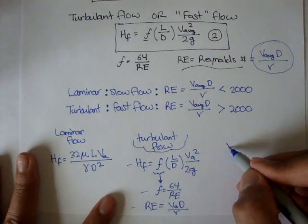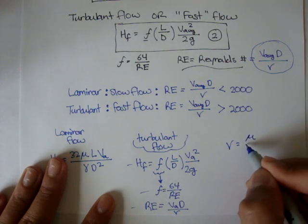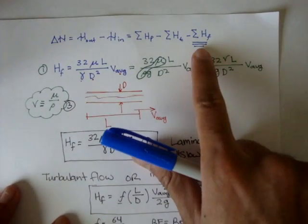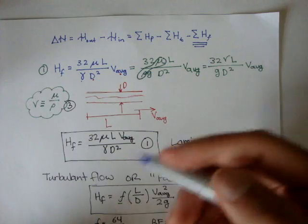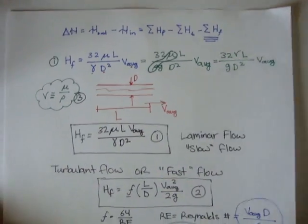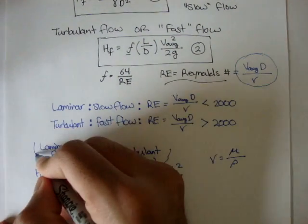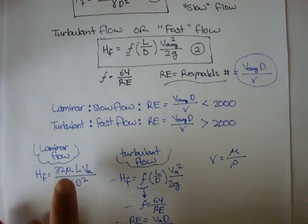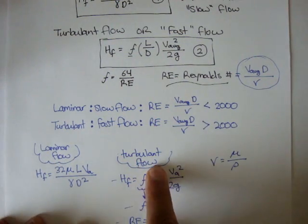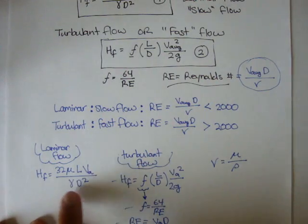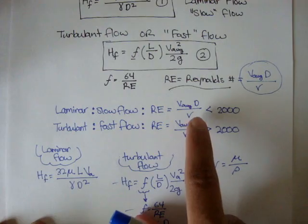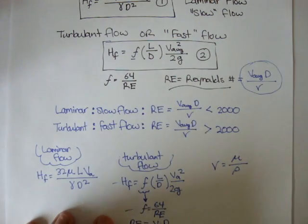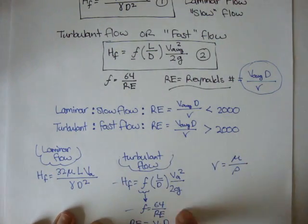For future problems, if we don't know whether the flow is laminar or turbulent, we always assume laminar first. We plug in our numbers, and if we find that the Reynolds number is less than 2,000, our assumption was correct and it is laminar flow. If it's greater than 2,000, it's turbulent flow and we use the Darcy-Weisbach equations for turbulent flow.